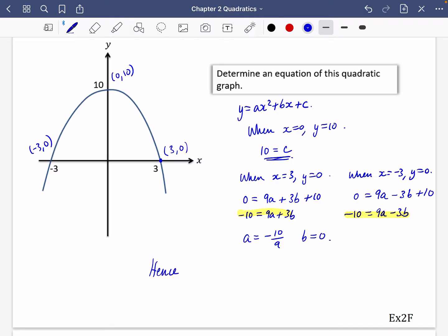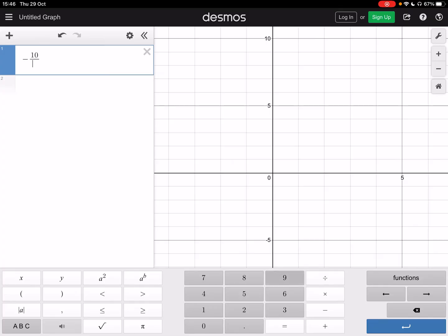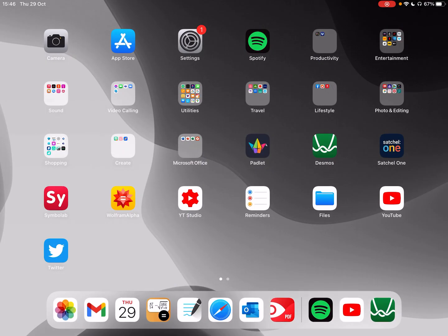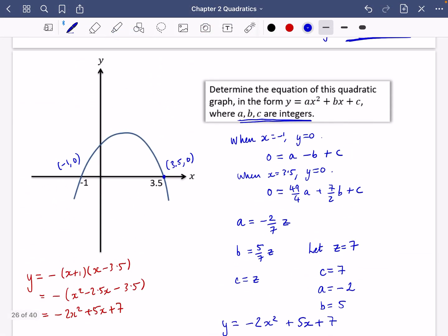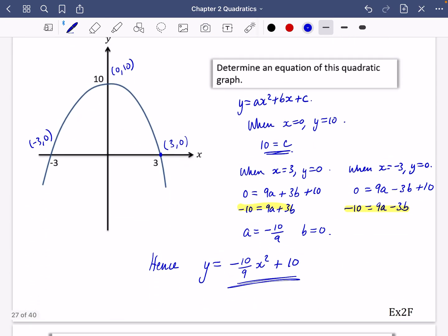Hence, the equation is y equals minus 10 over 9x squared plus 10. So it crosses at 10, 3, and minus 3. So I like this method. I think other people might try and do it in a different kind of way. But I actually like this idea of substitution and doing simultaneous equations. So you guys should have a go now at finishing off exercise 2f.